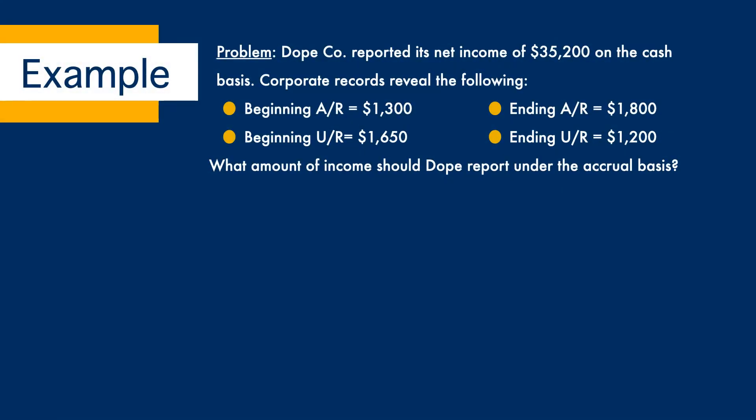Let's look at an example to help put it all together. Dope Company reported its net income of $35,200 on the cash basis. Corporate records reveal the following: we have some beginning AR and ending AR, and we have beginning unearned revenue and ending unearned revenue. The question asks, what amount of income should Dope Company report under the accrual basis? So from just reading that question, we can gather that we are given the net income in cash basis and need to reconcile it to accrual basis.